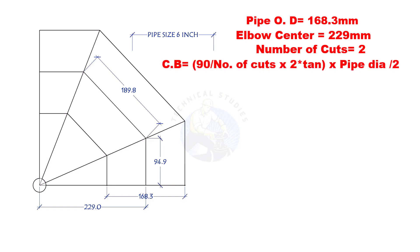Cutback is 90-degree divided by number of cuts times 2 multiplied by the half OD of the pipe. Half OD of the pipe is 84.15 mm. Number of cuts times 2 equals 4.